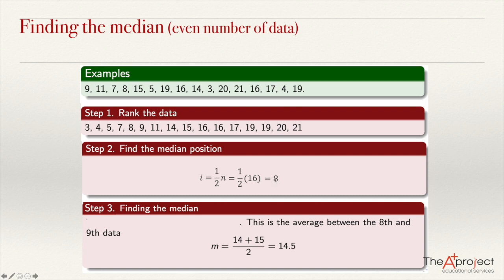What is the data in position number 8? Counting: 1, 2, 3, 4, 5, 6, 7, 8 — this data plus the next data. 14 plus 15 divided by 2, and that gives you the answer, 14.5, which is the value of the median.